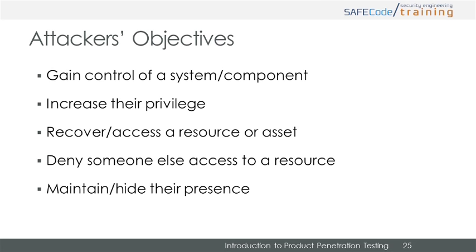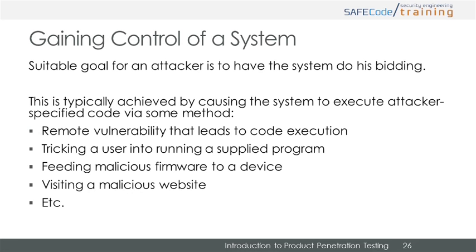One classic goal of attackers is to gain control of their target — this is the primary goal implied in the classic industry definition of penetration testing. Attackers usually look to get their target to execute some kind of attacker-specified code, which could be delivered by a remote vulnerability that leads to code execution, by tricking a user into running an evil program such as through an email attachment or USB drive, by loading malicious firmware onto a device, by visiting a malicious website, and so on.